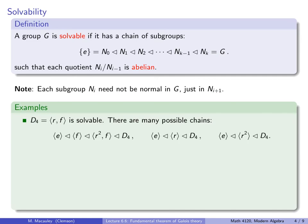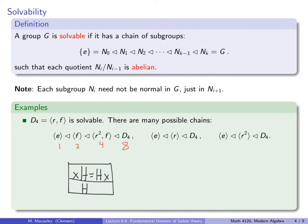Let's do some examples. Let's begin with D4, which I claim is solvable. There are many possible chains. The order of each subgroup is a power of two because D4 has order eight — so orders 1, 2, 4, and 8. Each is normal in the next subgroup because it has index two. Recall that any subgroup of index two has to be normal. So the subgroup generated by F is not normal in D4, but it is normal in this subgroup. Here's another possible chain: the trivial subgroup is normal in the subgroup generated by R, which is normal in all of D4, with orders 1, 4, and 8.